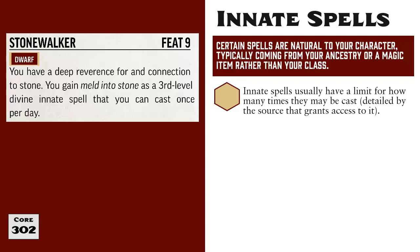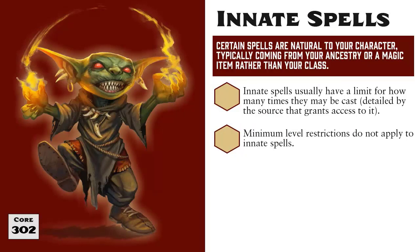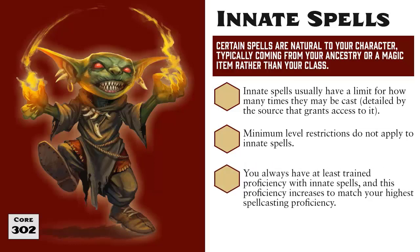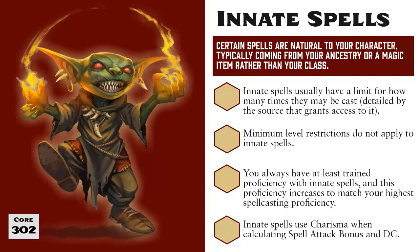Innate cantrips are automatically heightened as normal for cantrips, but not other innate spells. When you gain access to an innate spell, you can cast it even if it is a higher level than you normally would be able to cast — this is especially common with monsters. You also always have at least trained proficiency in the spellcasting tradition of your innate spells, and you use Charisma as the ability modifier when calculating the spell attack bonus and spell DC for innate spells, even if you use a different ability for spells granted by your class. See my videos Magic Part 6 and Magic Examples: Calculating Spell Attacks and DCs for more information.